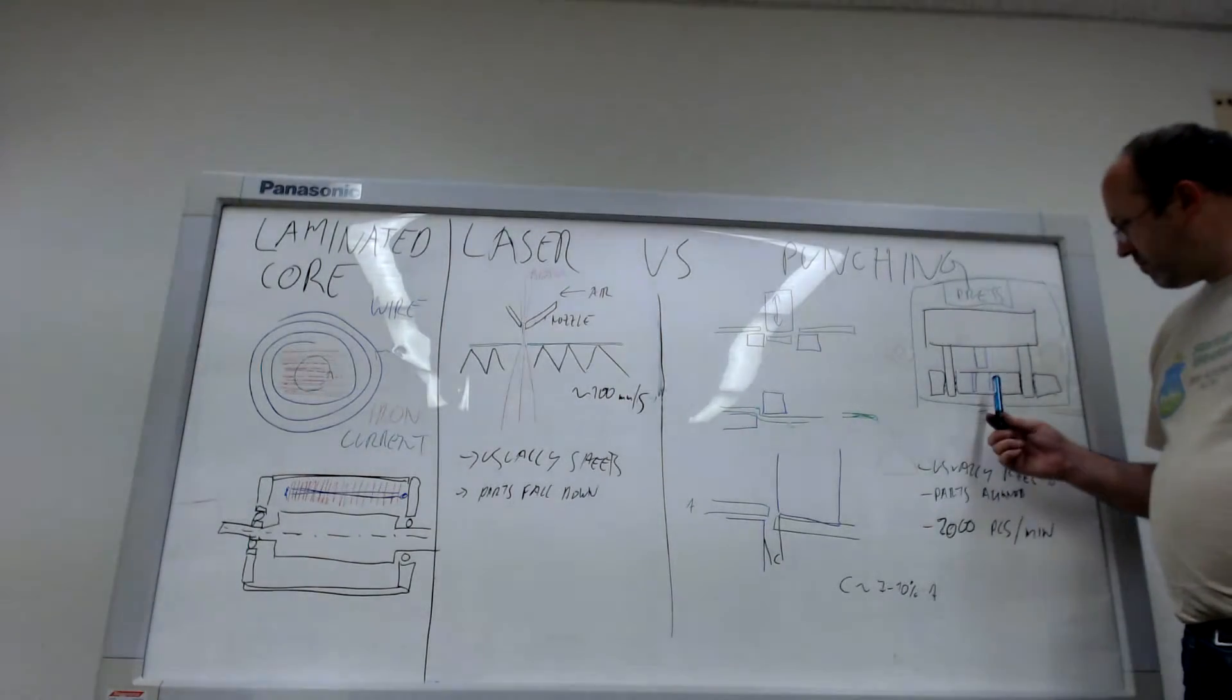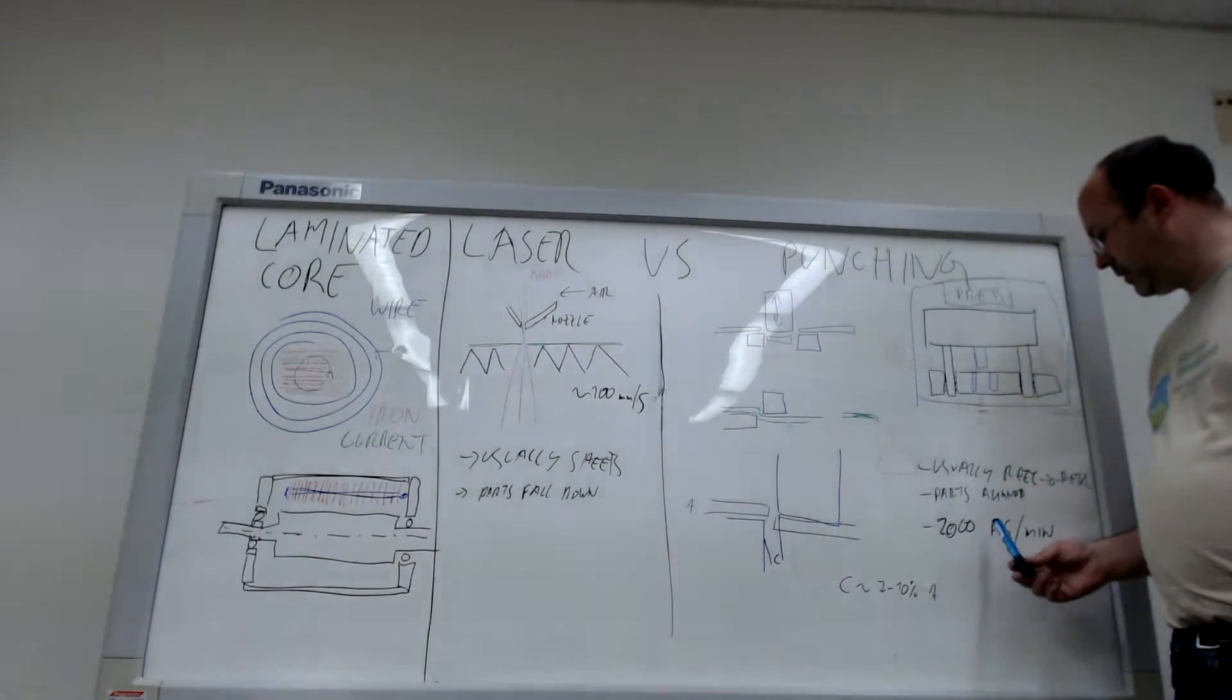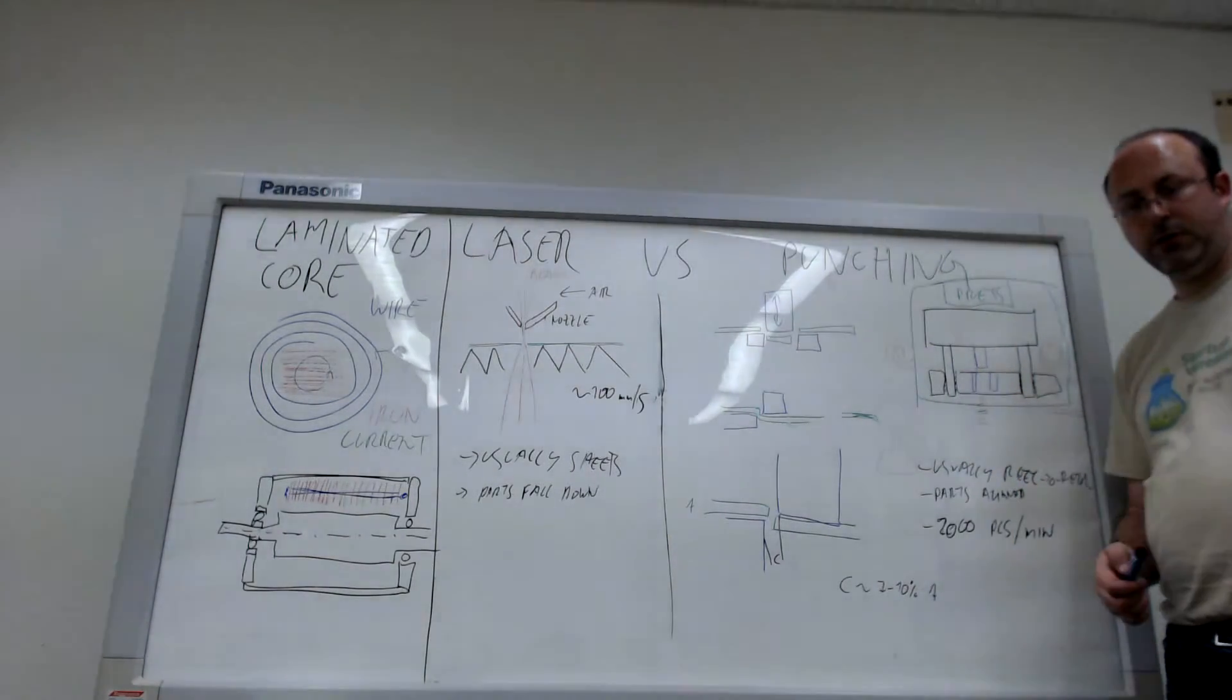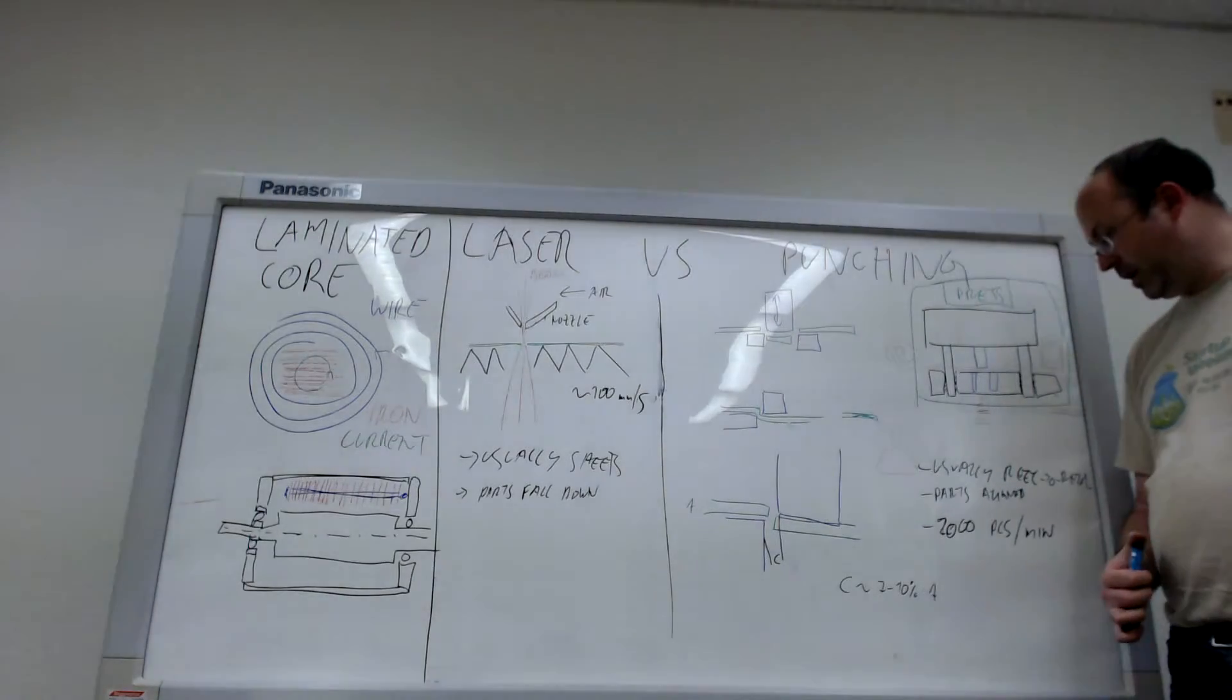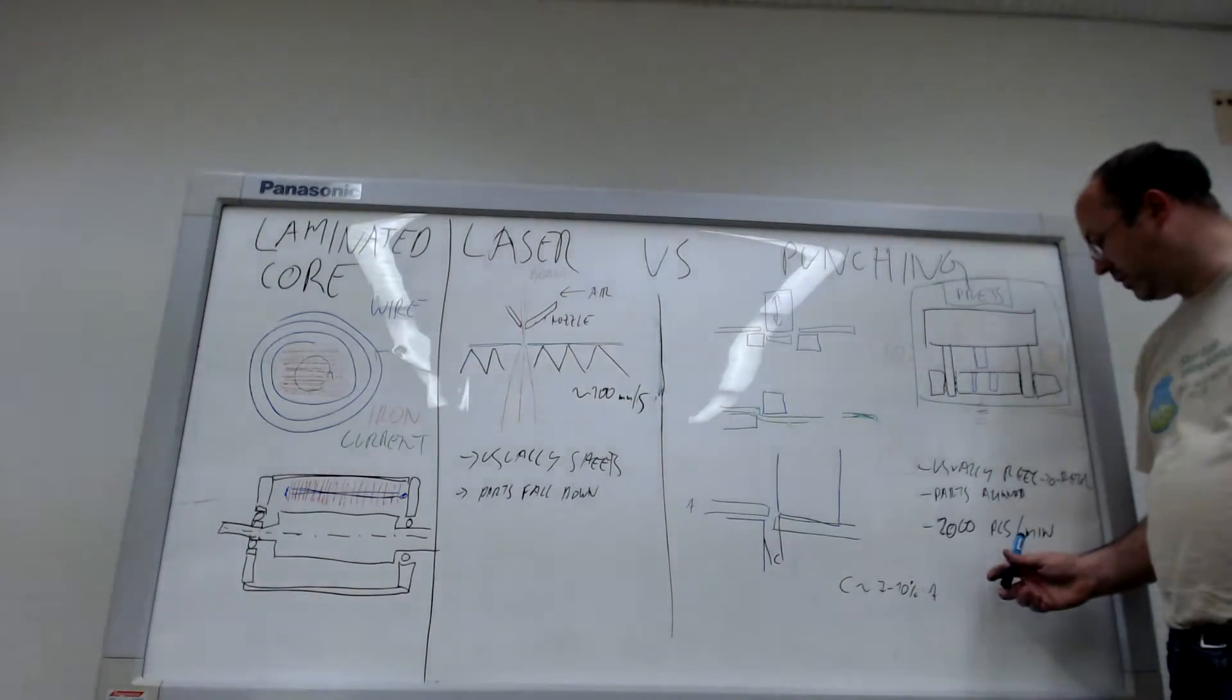And from the speed, if you make thin sheet metals, small parts like this, you can easily get up to 2,000 pieces per minute, which is very productive and good if you want to make large quantities of motors.